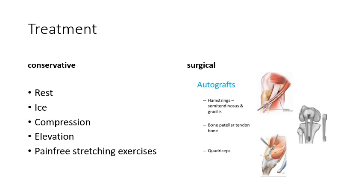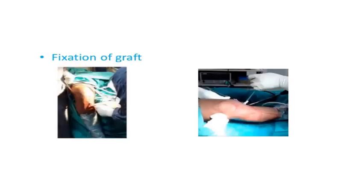If there is only a slight stretch or minor tear, we go for conservative treatment: rest, ice, compression, and elevation — the RICE concept — along with pain-free stretching exercises. If there is a moderate tear or complete rupture, we proceed to surgery. To repair the ACL, we take autografts from either the hamstrings, the patellar tendon, or the quadriceps tendon, and fix the graft during surgery.